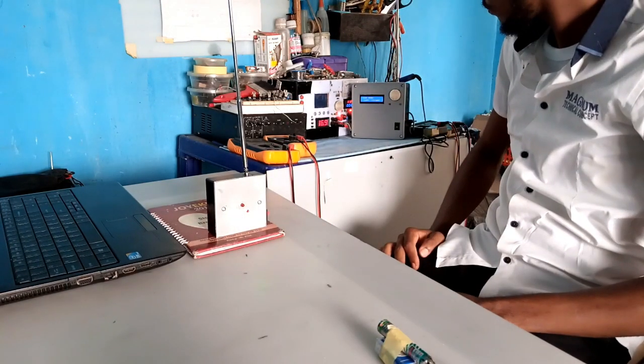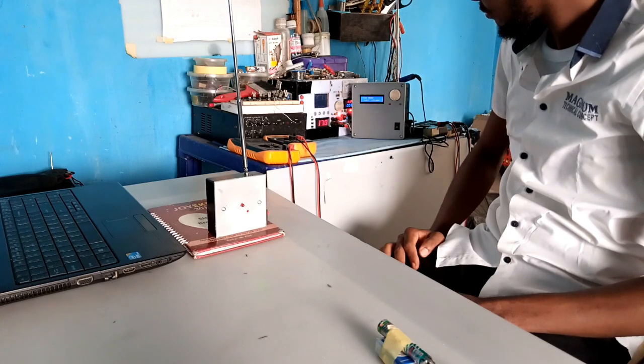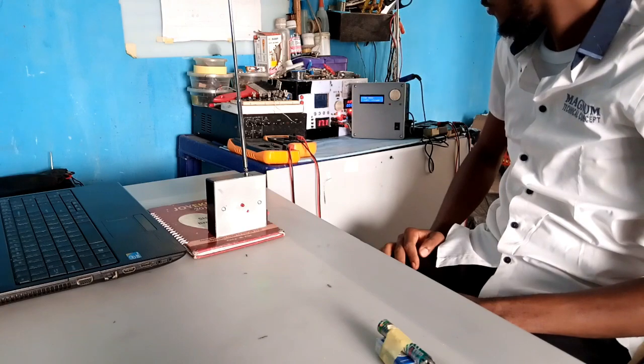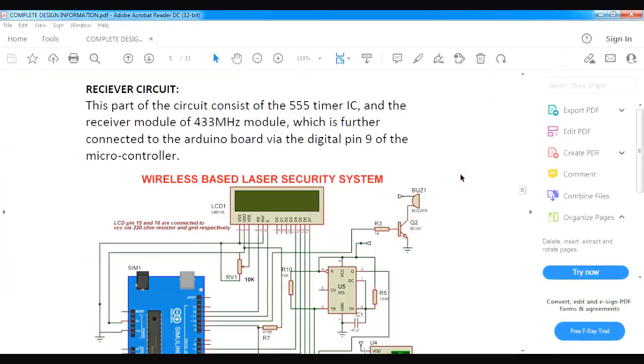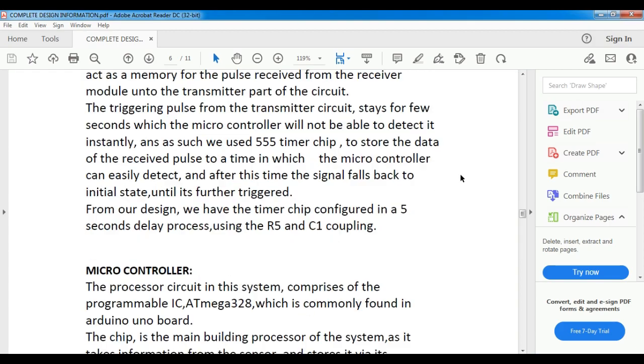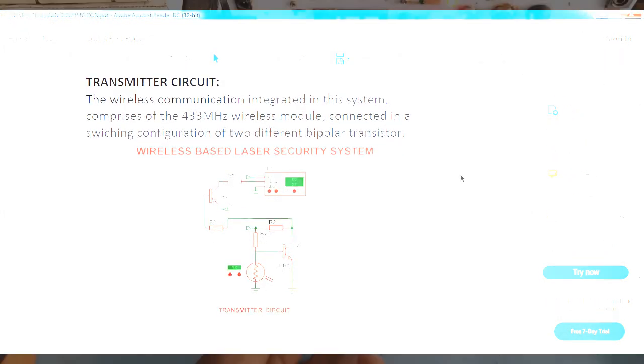The project is completed and you can find the full design information via the video description below. Limitation of the project? The maximum distance the RF module can go is 100 meters. So note that whenever you intend to build upon this design.